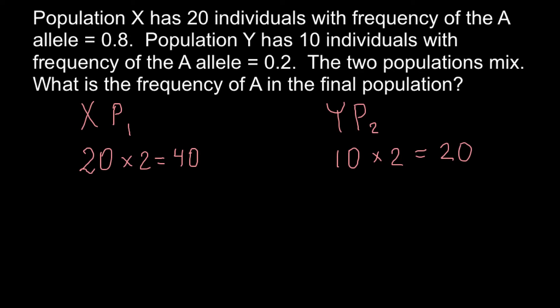And also, we have to multiply this number by 0.8 here. And we are going to get 32 alleles that is capital A. And here, we have to multiply by 0.2, and we are going to get 4 capital A alleles.